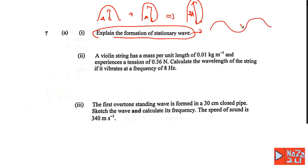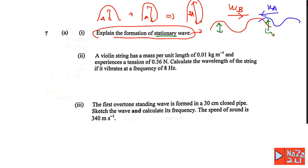To produce a standing wave, we have a wave traveling to the right (wave A) and another wave in blue traveling to the left (wave B). For the formation of a standing wave, the two waves must have the same amplitude, same speed, same frequency, and travel in opposite directions. This is how you explain the formation of a standing wave.